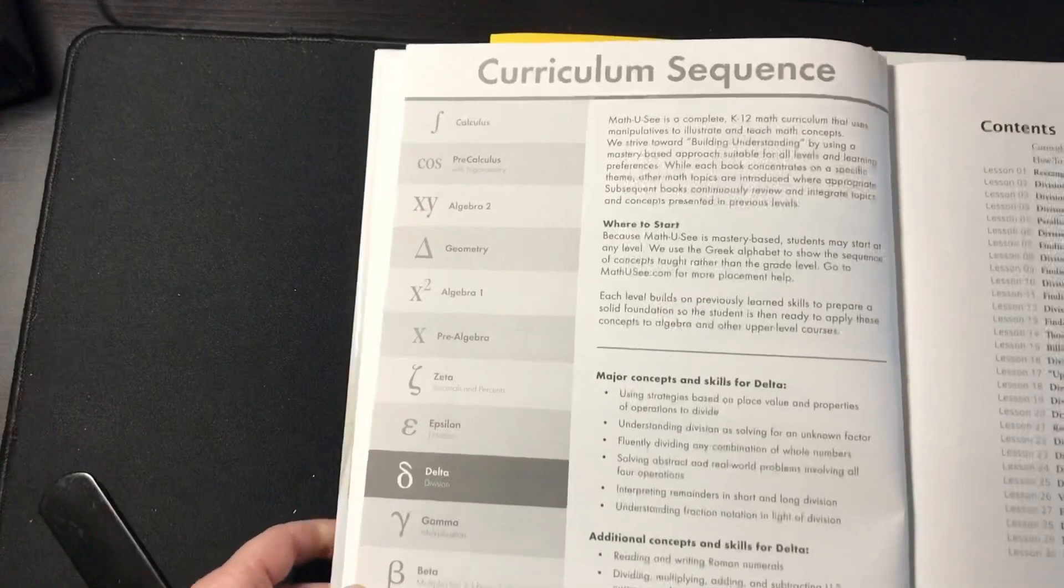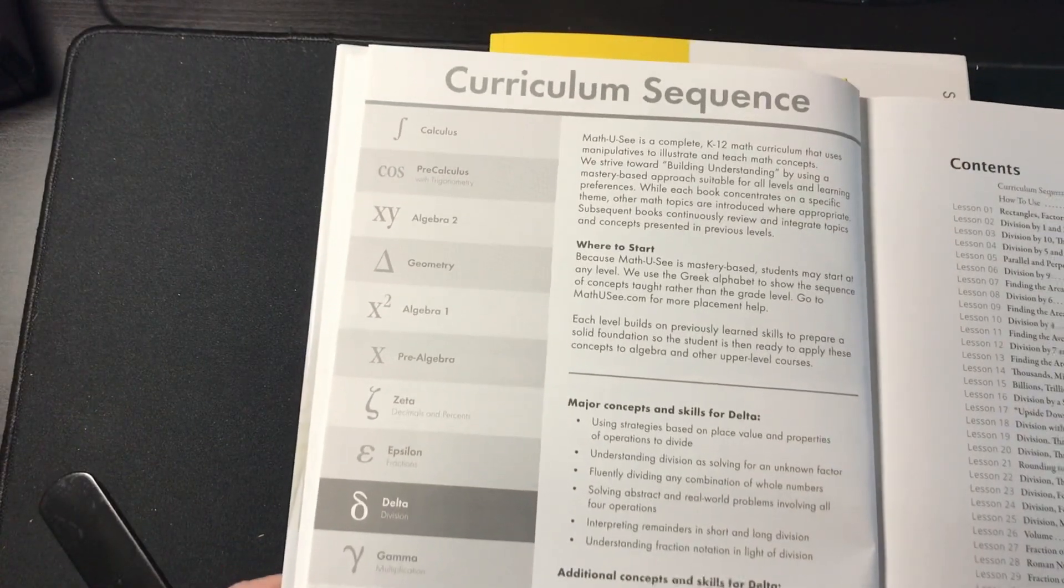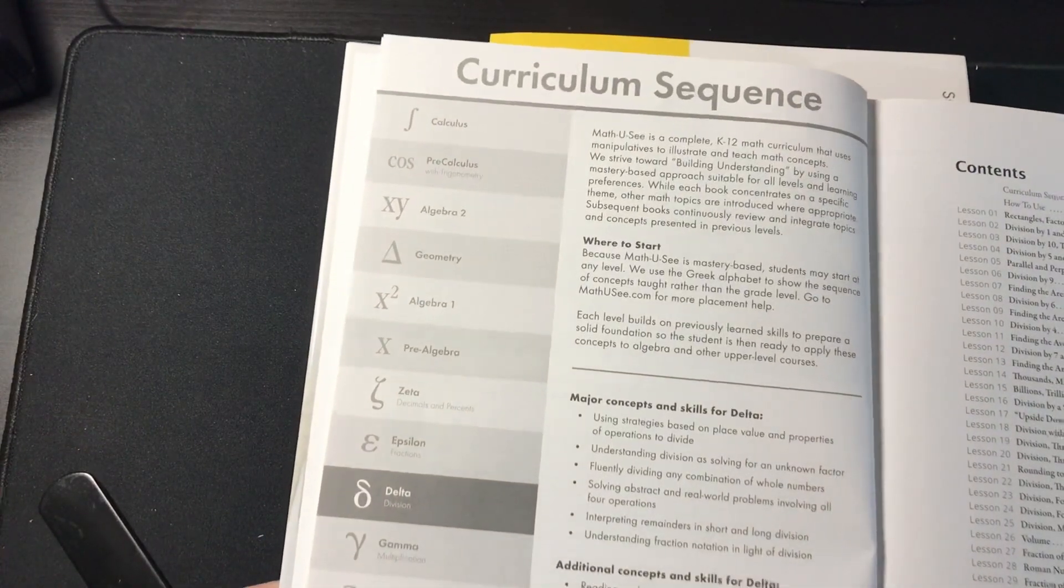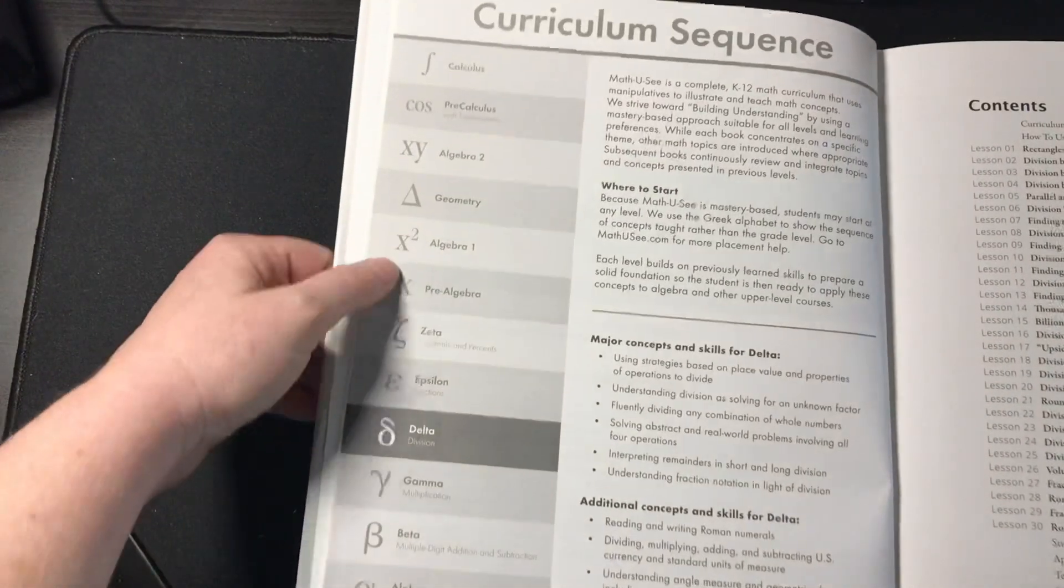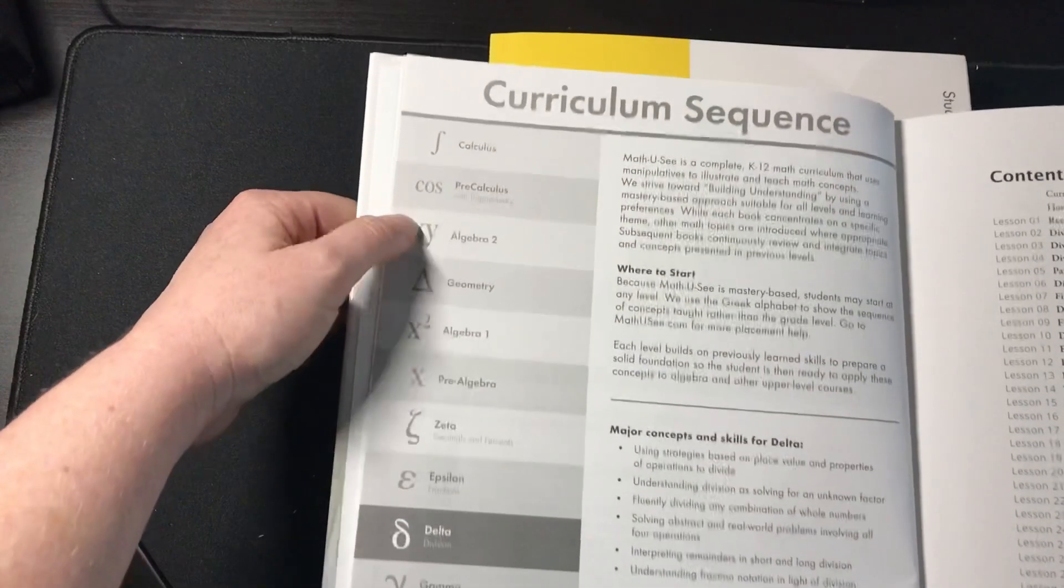And so here you go. Here is the curriculum sequence here. Primer, if you're unfamiliar, Primer, Alpha, Beta, Gamma, Delta, Epsilon, Zeta, Pre-Algebra, Algebra 1, Geometry, Algebra 2, Pre-Calculus, and Calculus.